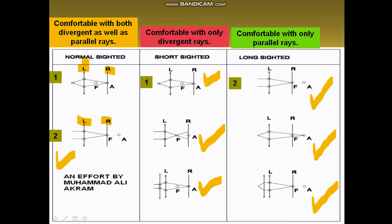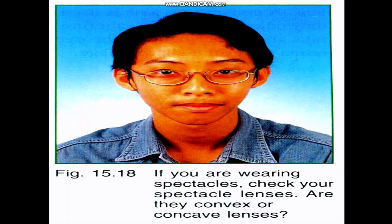This worksheet will really explain the whole summary of the concept of short sightedness and long sightedness clearly. You have to spend some time on this worksheet and you can also get a printout. Referring to figure 15.18, if you are wearing spectacles, check your spectacle lenses — are they convex or concave? Then you can decide whether you are short sighted or long sighted.